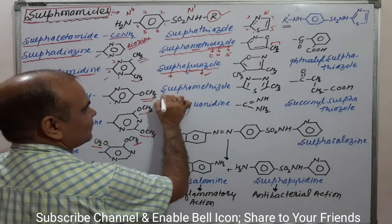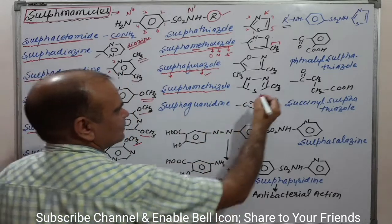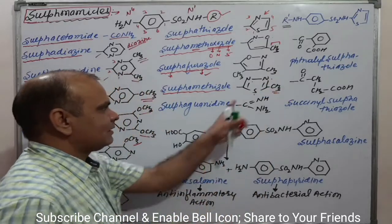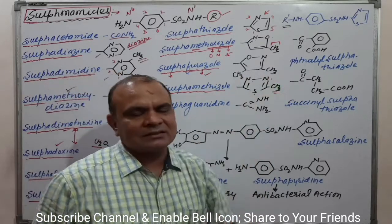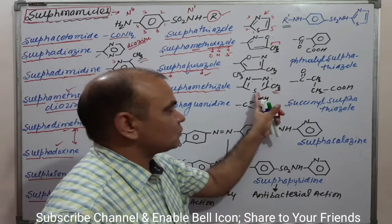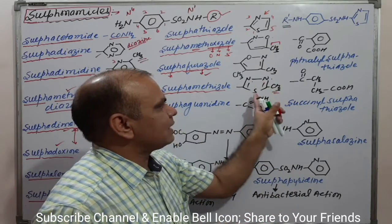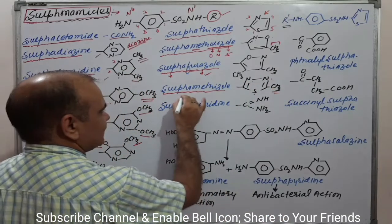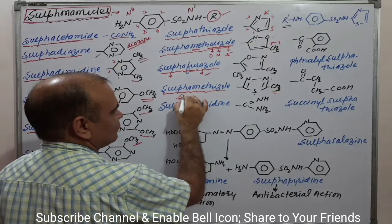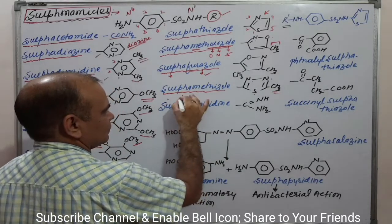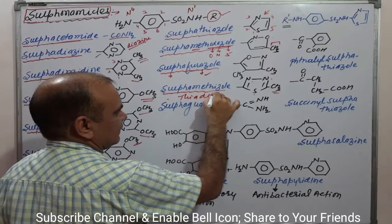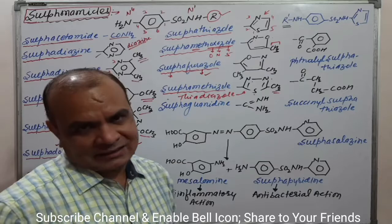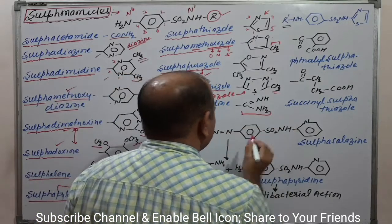Next is sulphamethoxidiazole. Here, the ring system contains methyl, sulfur, and 2 nitrogens, making it a thiadiazole ring: 'thia' for sulfur and 'diazole' for 2 nitrogens in a 5-membered ring. This ring system is known as thiadiazole. The last ring system discussed is guanidine, giving sulphaguanidine.